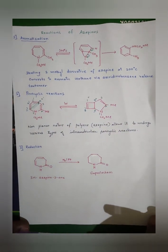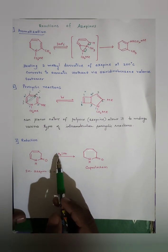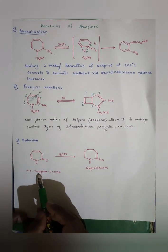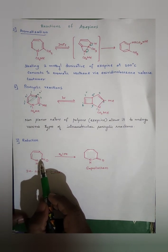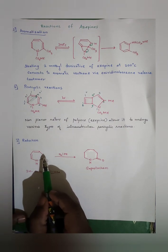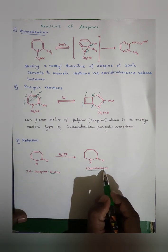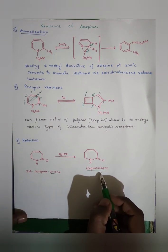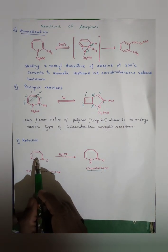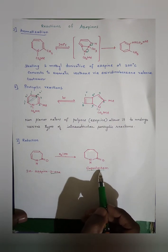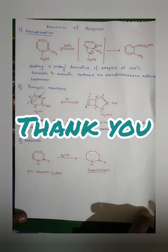The last reaction is reduction. When 3H-azepin-2-one — which has a keto group at the second position — reacts with H₂ in the presence of Pt catalyst, we get caprolactam. Caprolactam is a medicinally important compound. On reduction, all the double bonds get reduced and we get caprolactam. These are the synthesis and reactions of azepines.